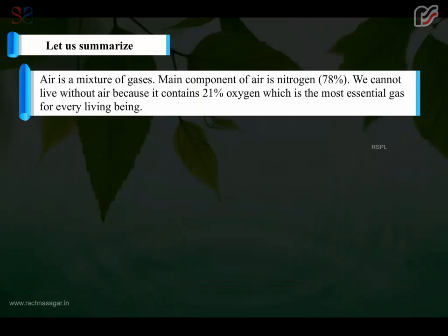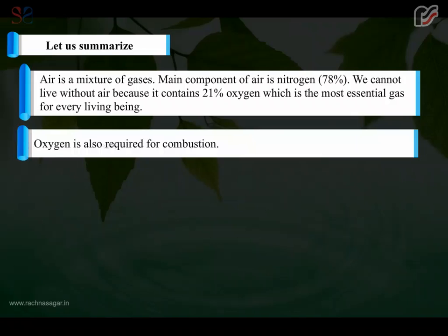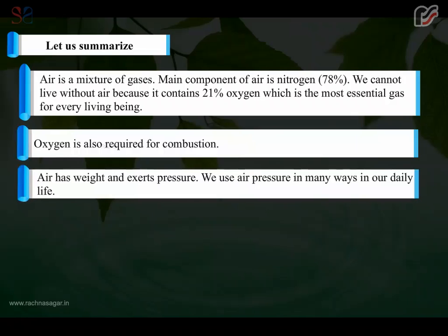Air is a mixture of gases. Main component of air is nitrogen, 78%. We cannot live without air because it contains 21% oxygen, which is the most essential gas for every living being. Oxygen is also required for combustion. Air has weight and exerts pressure. We use air pressure in many ways in our daily life.